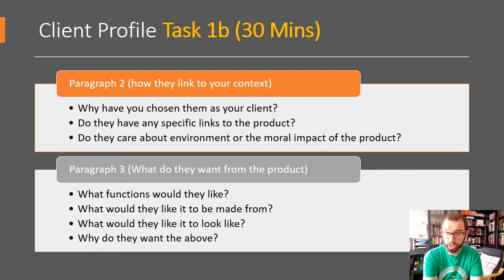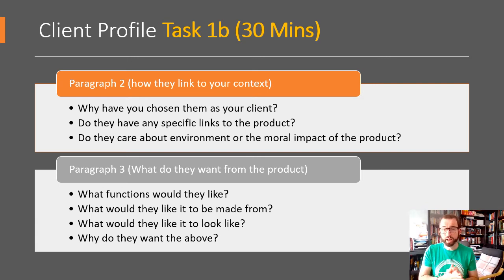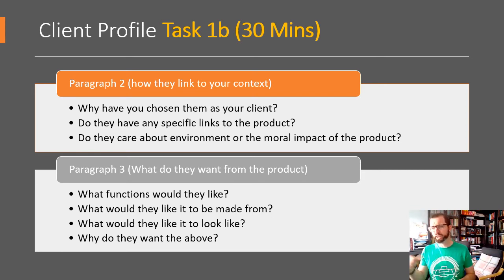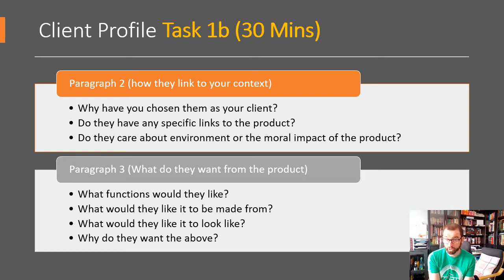The second half of the page is paragraph two, which really explains how this person links to the context — that's where you'll get those marks from the mark scheme. Ask yourself: why have you chosen this person as your client, how does it link to the context, and do they have a specific link to the product you've chosen? Also consider whether they care about the environment or the moral impact of the product — for example, do they care about recycling or reusing products? The moral impact question — whether the product might offend anyone or how people view it in society — is a harder question that pushes you towards the higher marks, so it's worth having a go.